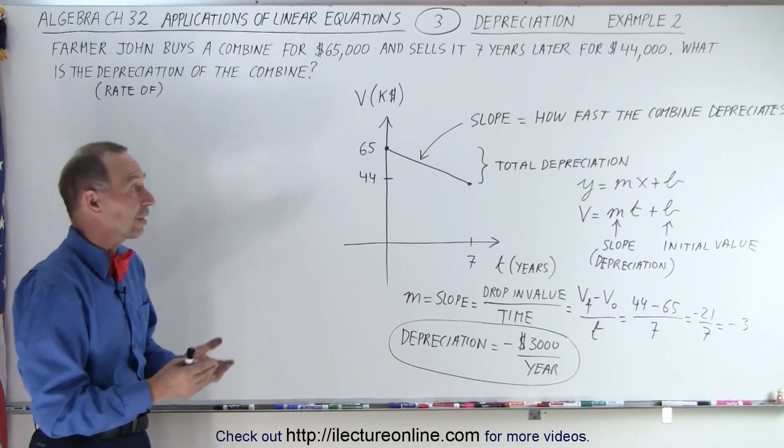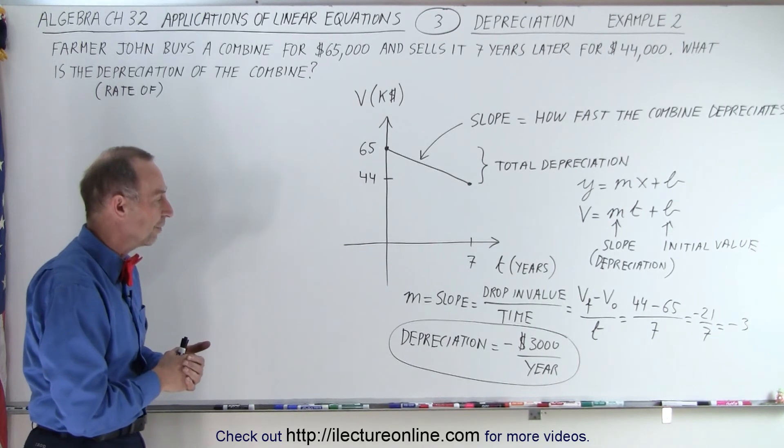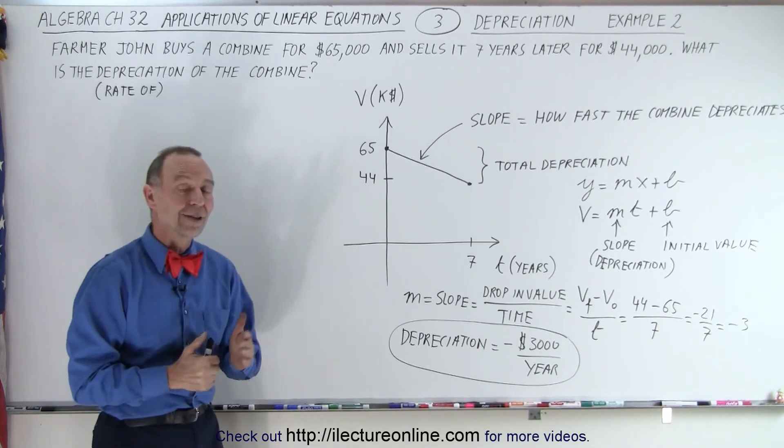The value of that combine is dropping by $3,000 every year over a period of seven years. So the farmer can then sell it for $21,000 less than what the farmer bought it for seven years earlier. And that is how it's done.